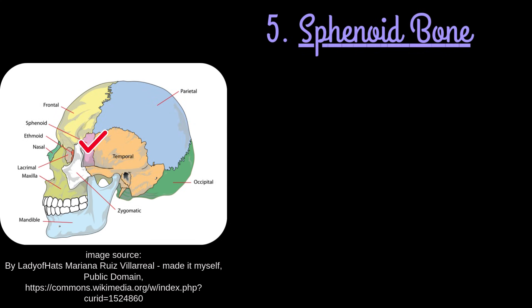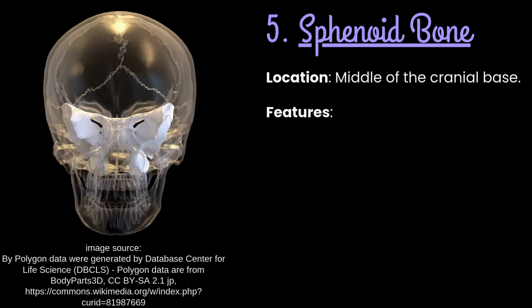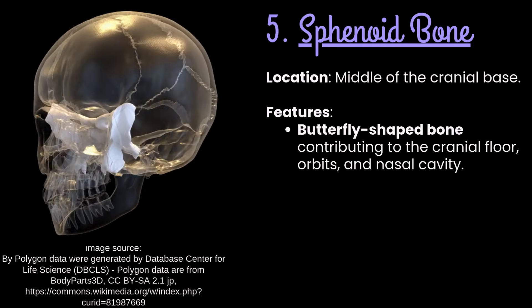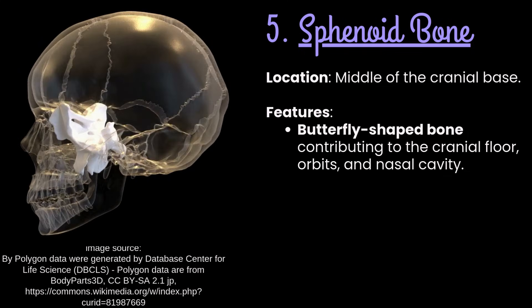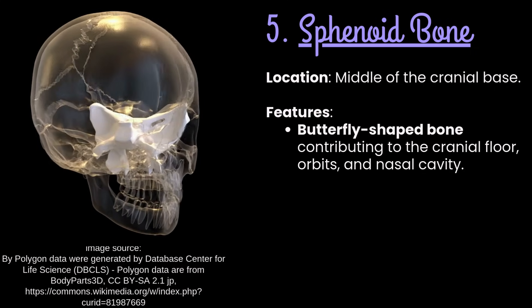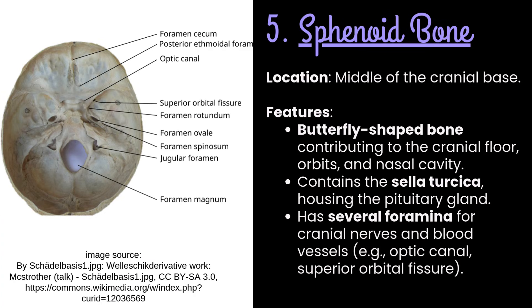Number 5: Sphenoid bone. It is located in the middle of the cranial base. It is a butterfly-shaped bone contributing to the cranial floor, orbits, and nasal cavity. It contains the sella turcica, housing the pituitary gland. It has several foramina for cranial nerves and blood vessels, for example the optic canal and superior orbital fissure.